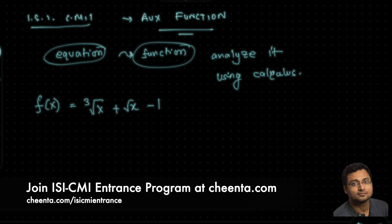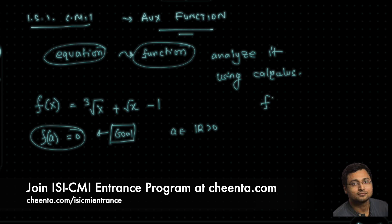We want to show that this function has a positive real zero. There is a positive number a such that f(a) = 0. This is our goal. Notice that f(0) is negative 1. If you plug in x equals 0, then f(0) is negative 1.